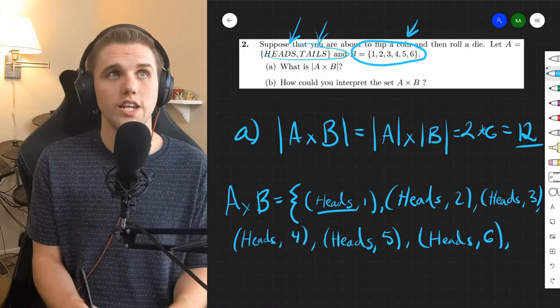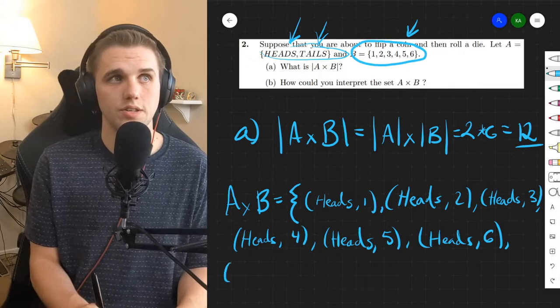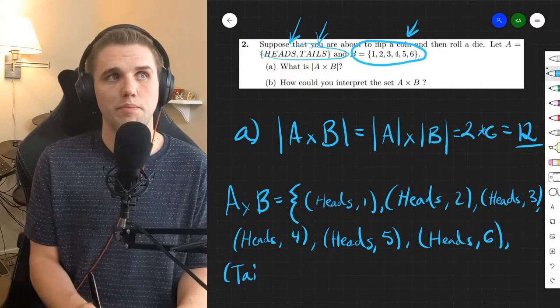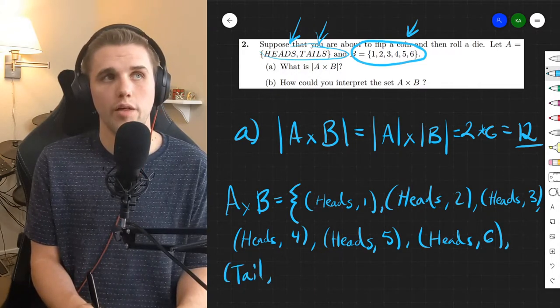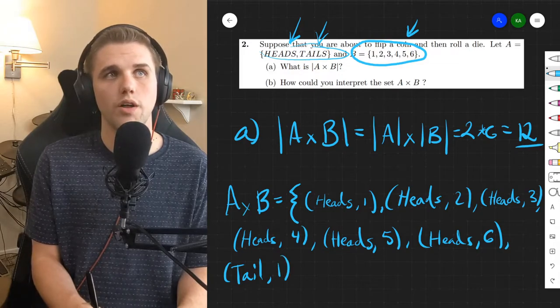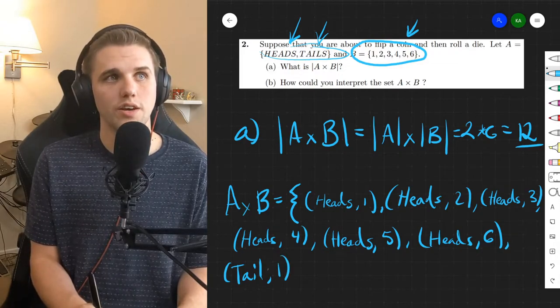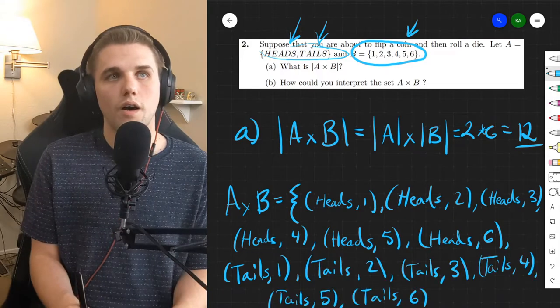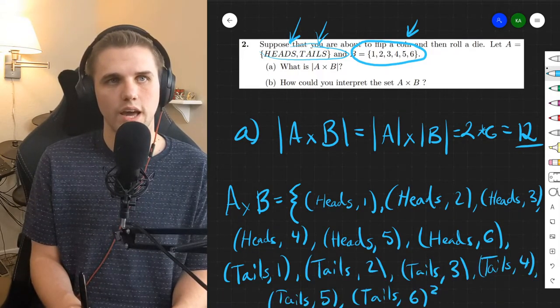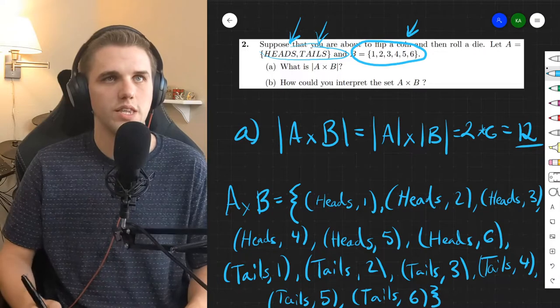So now let's go on to the next element in A which is tails. And we'll go through every possible combination with elements in B. So tail one. And I should put tails one. Alright. And then we get all the way up to tails in six. And that is all of the elements in this set.